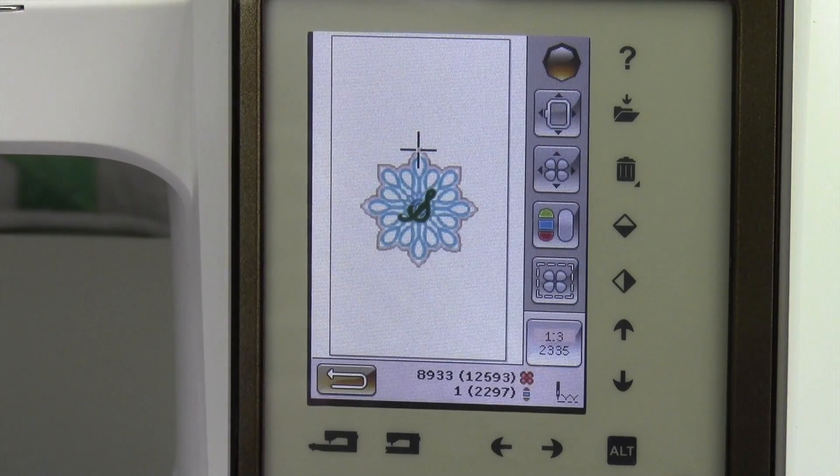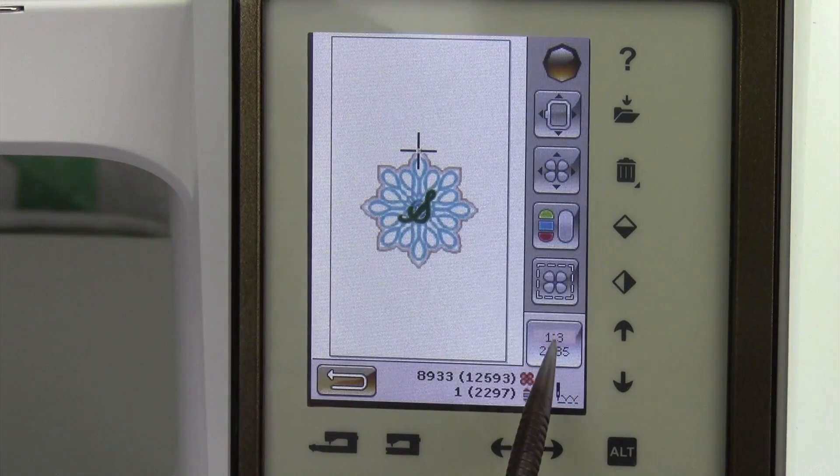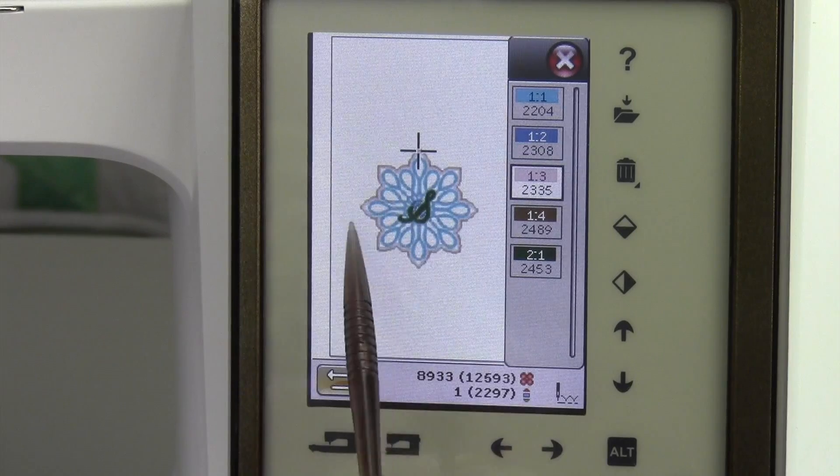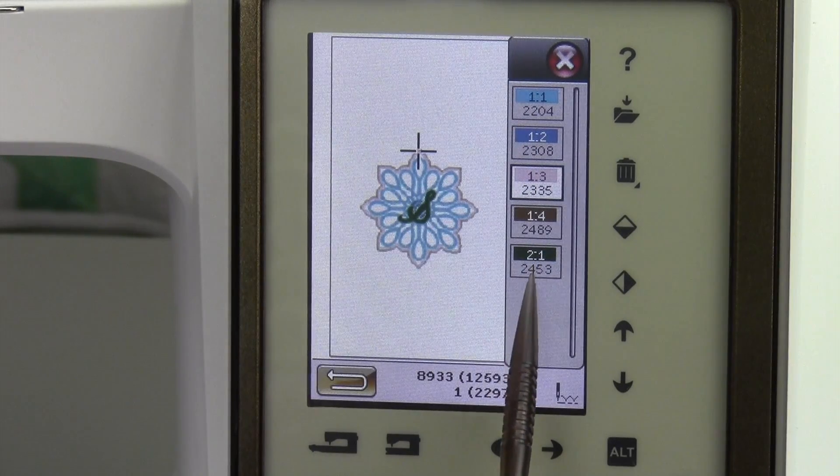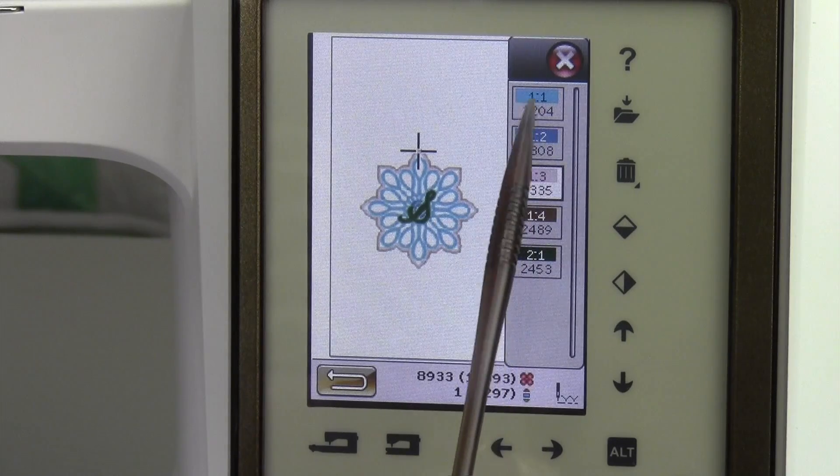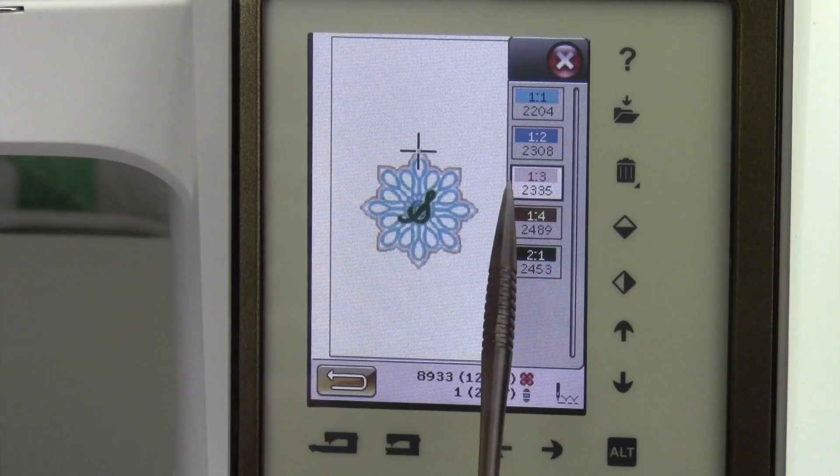Since we're doing some finessing of order of color, let's touch on the color block. Notice that the design is the first four colors, and the monogram is the fifth color. I'm going to skip the first two colors. All I need to do is whatever block I pick, that's the color it's going to stitch.